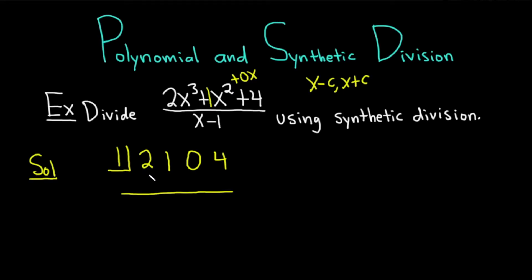And here we start the process. I'm going to change colors for this step. The first step is to take this number and just bring it down. So you just write it down. So 2, there it is. And then you start the multiplication process. 2 times 1 is 2. And then you add 1 + 2 is 3.